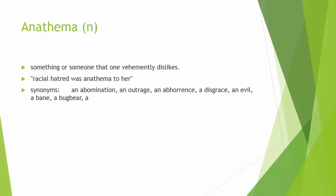Next word: anathema. Anathema is a noun meaning something or someone that one vehemently dislikes. Look at the sentence: racial hatred was an anathema to her. An abomination, an outrage, an abhorrence. So it's something you intensely dislike — not just a little bit, but you really, really dislike it. It would be an anathema to you.